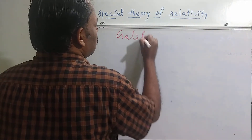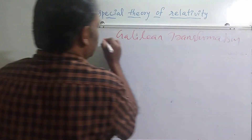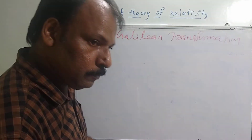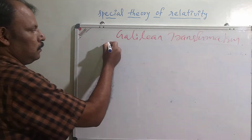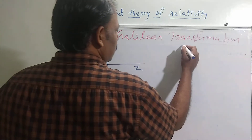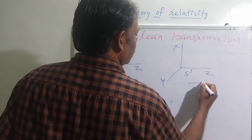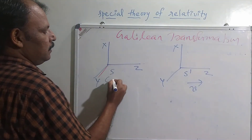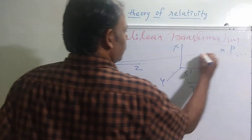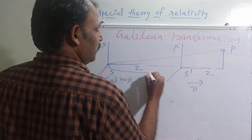In Galilean transformation, we are changing from one coordinate system to another. Frame S prime is moving with a speed V, and frame S is at rest. Consider a particle situated at a point — this distance will be the Z coordinate with respect to S.